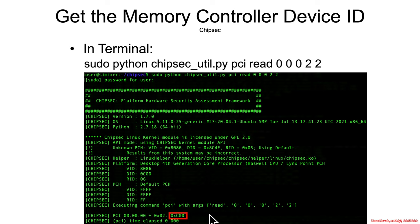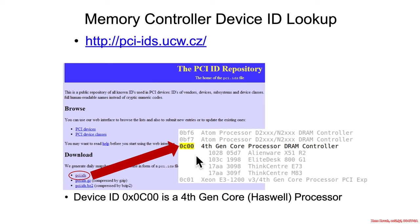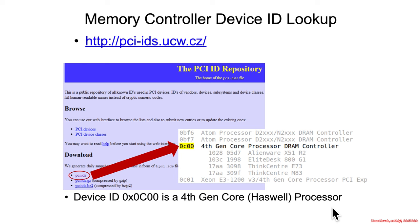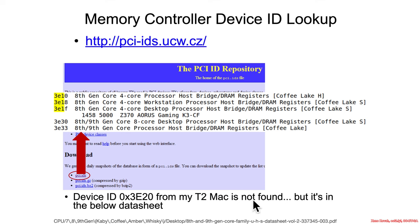Look at the website rather than these examples, since they'll get out of date. Historically, you would look up the device ID in the PCI device IDs list, and it would tell you — for example — that you have a fourth generation Core processor DRAM controller, which tells you that you must have a fourth generation Core processor as well.